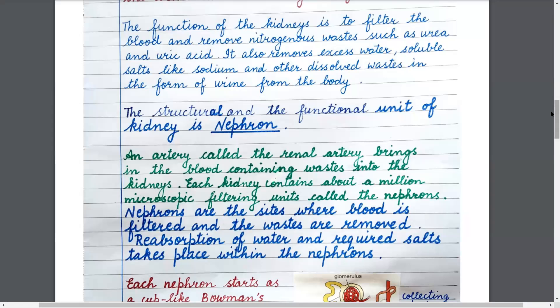The function of the kidneys is to filter the blood and remove nitrogenous waste such as urea and uric acid. It also removes excess water, soluble salts like sodium, and other dissolved waste in the form of urine from the body.